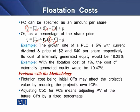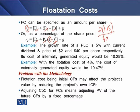Let's take an example. The growth rate of PLC is 5% with a current dividend and price of $2 and $40 per share respectively. To calculate the cost of internally generated equity using the dividend discount model, we take the expected dividend which will grow at 5%, so we multiply the current dividend of $2 by 1.05, then divide by the current market price of $40. This ratio gives the dividend yield, and adding it to the growth rate gives a cost of internally generated equity of 10.25%.